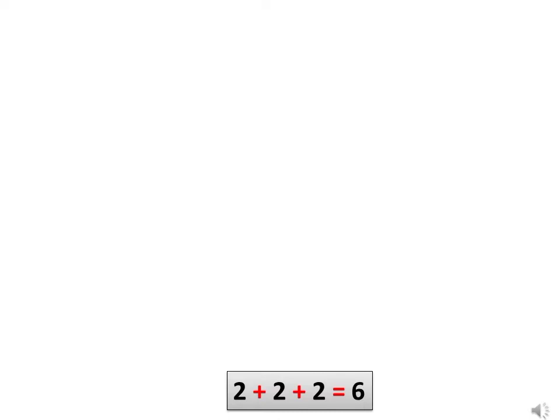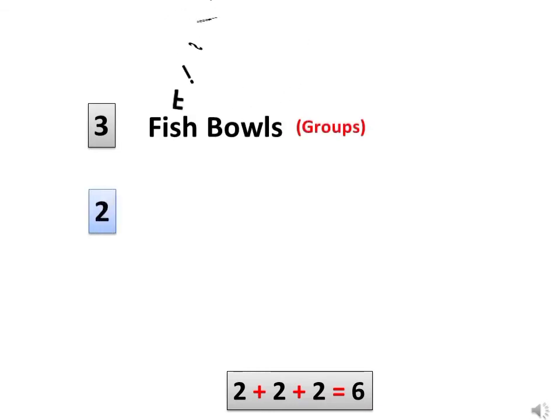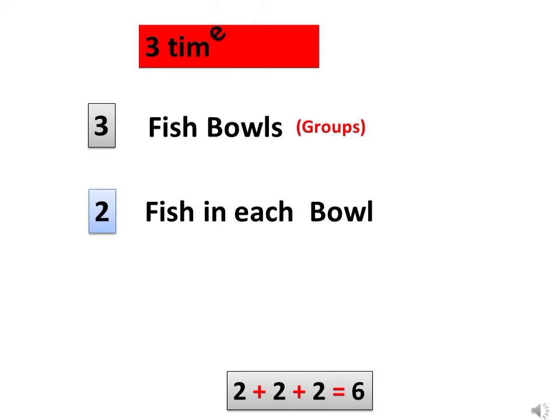We can do this multiplication in an easier way. Let's see how. There are 3 fish bowls and each bowl has 2 fish in it. Now, 3 times 2 is 6. So, there are 6 fish in all.